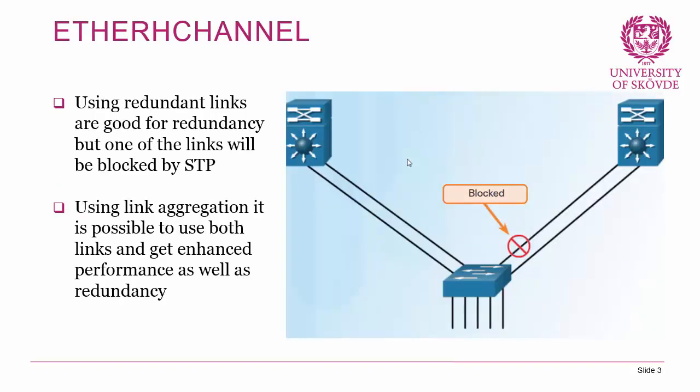Looking at EtherChannel: as established earlier in the course, using redundant links is good for redundancy, but one of the links will be blocked by STP, which is a bad way of using resources. Using link aggregation, it's possible to use both links and get enhanced performance as well as redundancy.